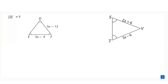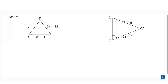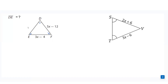Now in the first question, if you look at the diagram, in the triangle the three angles are given, and according to this, all three angles are equal. So that means this angle, this angle, and this angle are equal. If the three angles are equal, that means the triangle is an equilateral triangle, and in an equilateral triangle all the sides are equal.